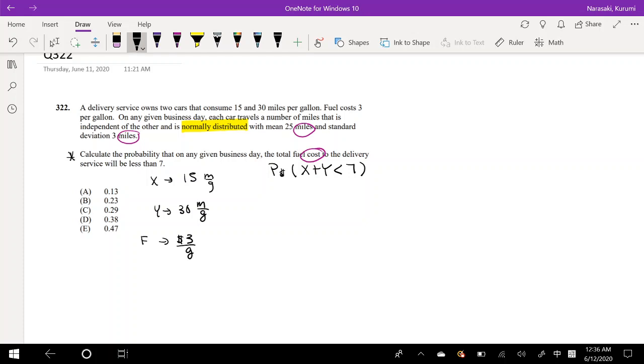So right now we know that x is 15 miles per gallon. I'm actually going to divide by 3 so the gallons cancel out, and I get this is equal to 5 miles per dollar.